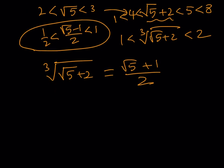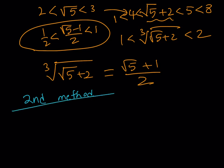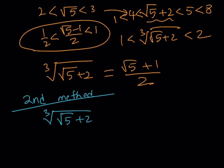Now here's the second solution method — a different, more direct way to solve this. Since the expression under the cube root involves square root of 5, its cube root must be something of the same form. So I'm going to assume the answer is in the format A root 5 plus B, where A and B are rational numbers.